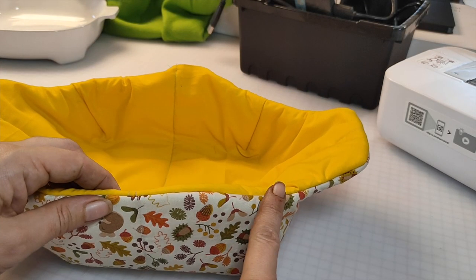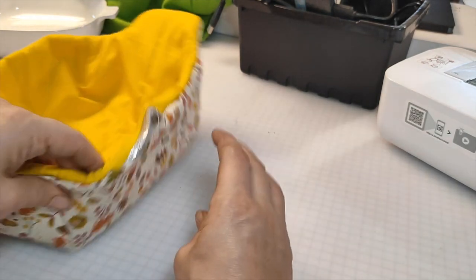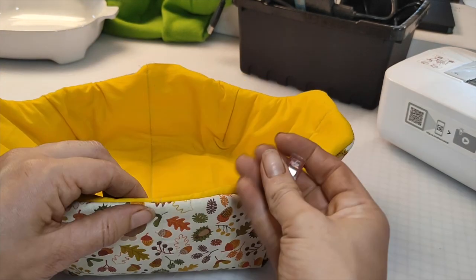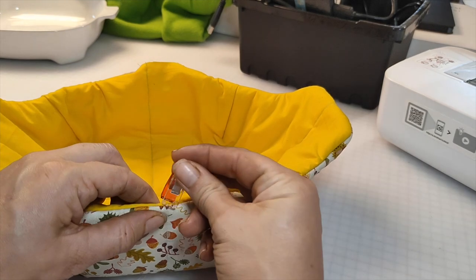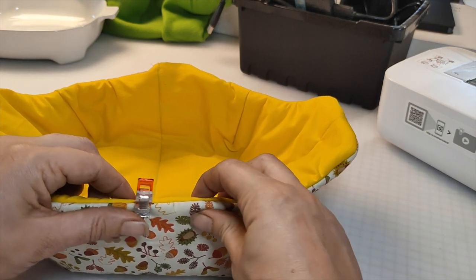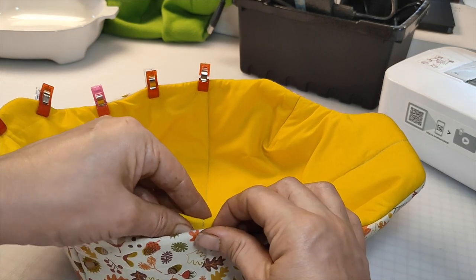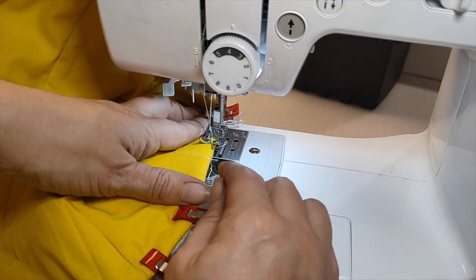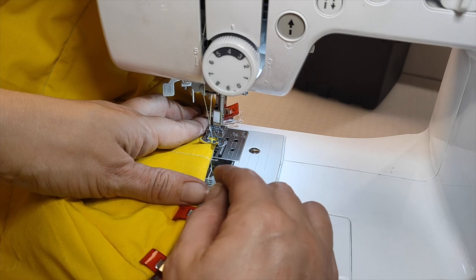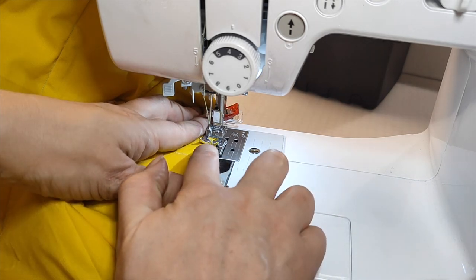Now we're just going to top stitch around the edge to make it nice and neat and also to seal up this hole. Use quilters clips or pins to pin around the edge which will keep it nice and flat while you're sewing. Fold the open seam inwards and clip to secure. To finish we're going to top stitch around the edge of the casserole cosy as close to the edge as possible.